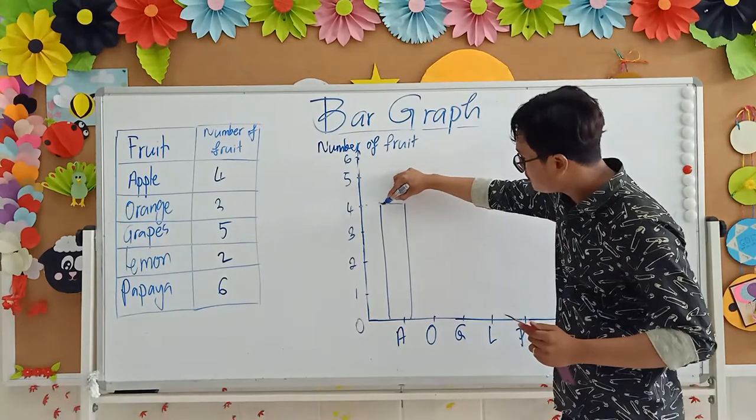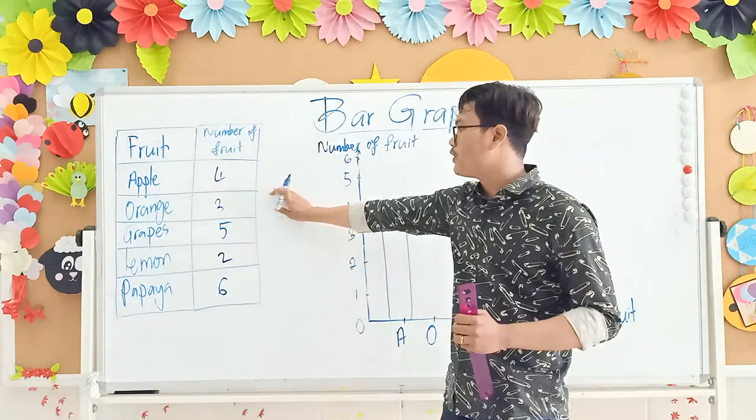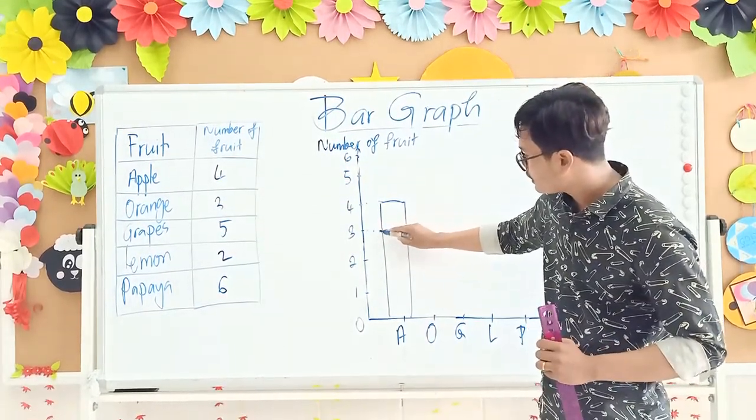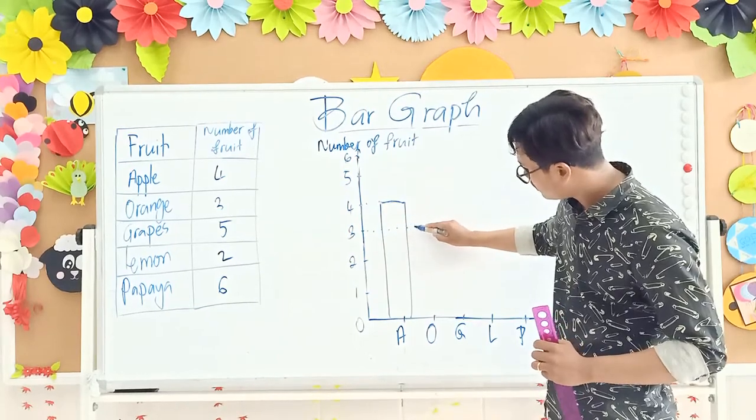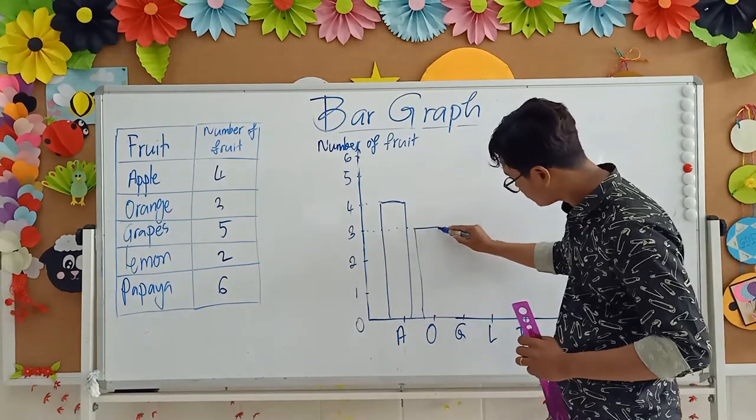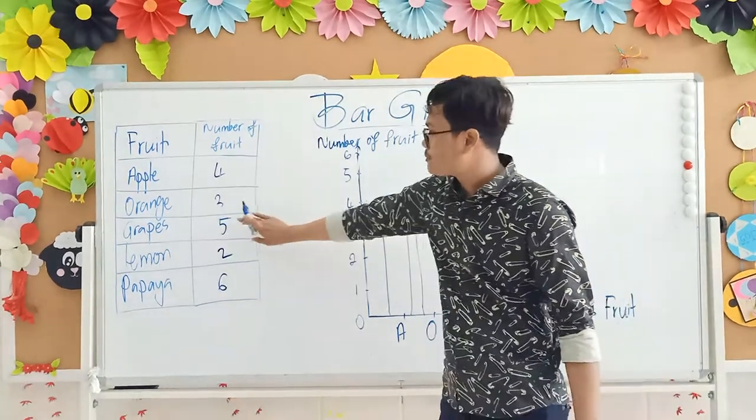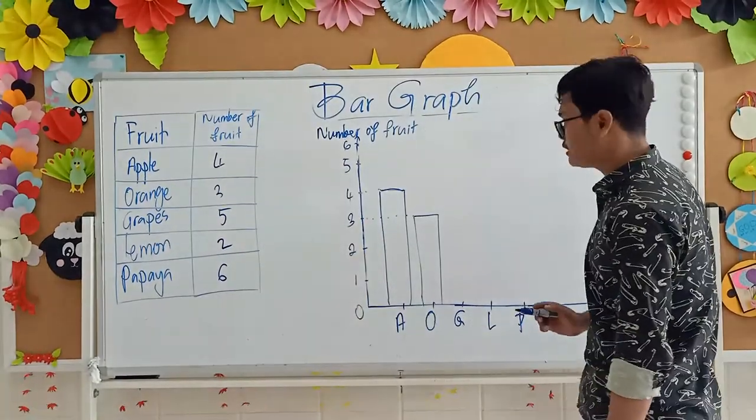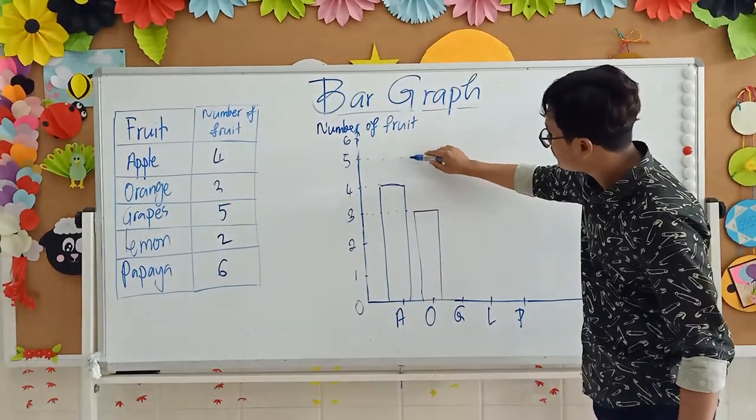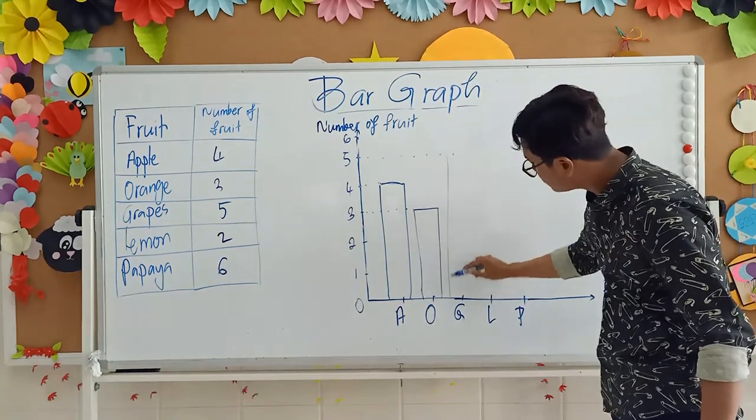So now it's time to draw the number. First you need to see apple four. So apple A four, right? So you need to write apple four. Here apple four. From here apple four. Okay, right like this. Four.